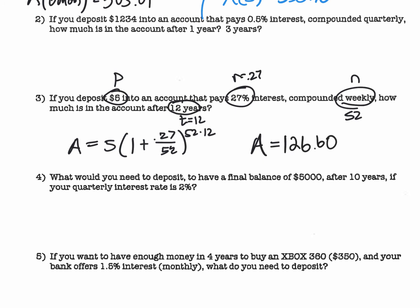So you made $121.60 in 12 years. This should help you be able to complete part two of section 7.1.